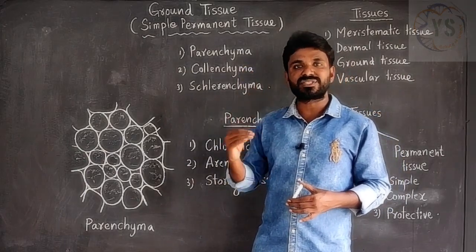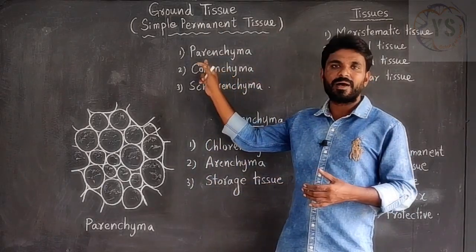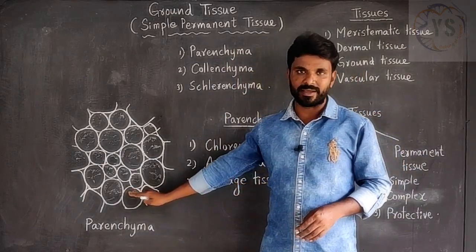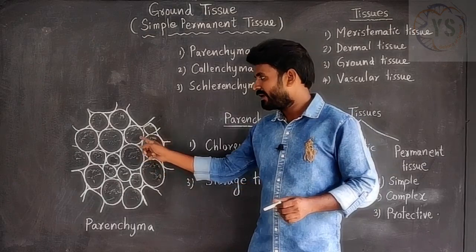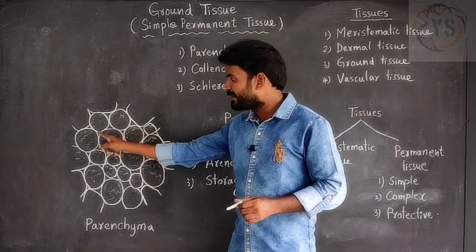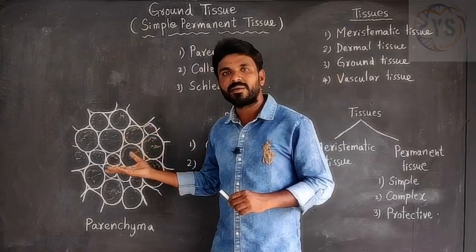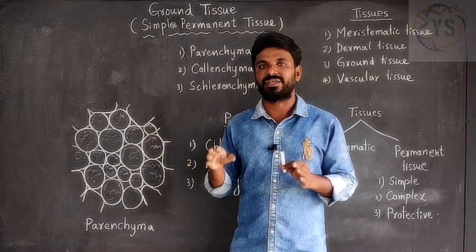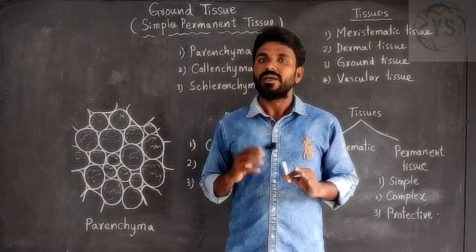Ground tissue involves in many functions, which we will discuss clearly. Ground tissue is divided into three tissues: parenchyma, collenchyma, and sclerenchyma. Parenchyma cells are very soft and have very thin cell walls, with some intercellular spaces present among the cells. The shape of the cell may be oval or round. Parenchyma is present in soft portions of the plant body and involves in many functions like preparation of food material, storage of food material, and giving mechanical or physical support to the plant body.